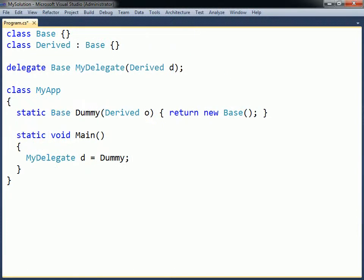As mentioned before, a method can be assigned to a delegate object if it matches the delegate's signature.